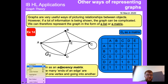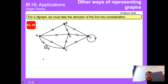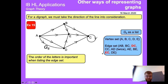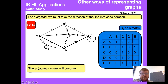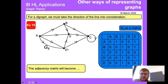For a digraph, the matrix changes because the direction of each edge is taken into account. The order of the letters becomes important — D-C and E-C specifically matter. For example, to go from A to D there are two ways, but from D to A we must respect the direction, so there is no direct route and we put zero there. The matrix is therefore no longer symmetric.